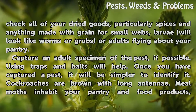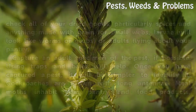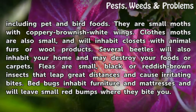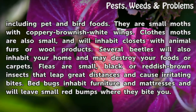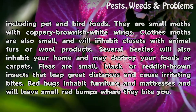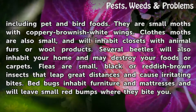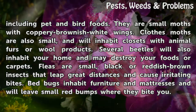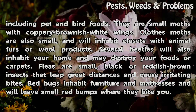Cockroaches are brown with long antennae. Meal moths inhabit your pantry and food products, including pet and bird foods; they are small moths with coppery brownish-white wings. Clothes moths are also small and will inhabit closets with animal furs or wool products. Several beetles will also inhabit your home and may destroy your foods or carpets.